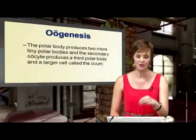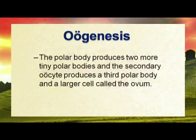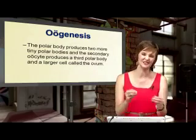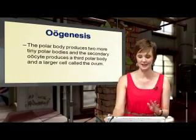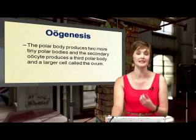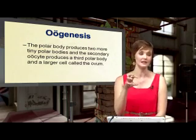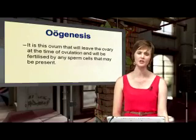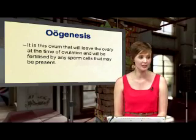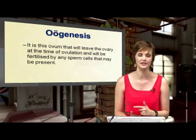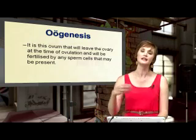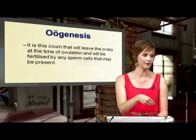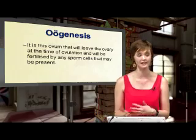In oogenesis there is an unequal distribution of cytoplasm. The tiny cell is the polar body and the larger cell is called the secondary oocyte. That secondary oocyte will go through a second meiotic division and produce a larger cell called the ovum, as well as another small polar body which disintegrates. The ovum is the egg that needs to be fertilized by a sperm cell. At the time of ovulation — which we'll look at with the menstrual cycle — that egg will leave the ovary and possibly be fertilized.